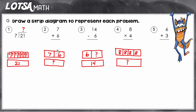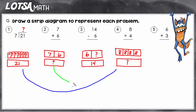Pay attention to how these division and multiplication strips look — they have several parts because division is just repeated subtraction and multiplication is just repeated addition. Notice how addition and multiplication are similar: because they're getting bigger, the unknown is always the whole. The same goes for subtraction and division — we know the whole, and the unknown is one of the parts. So you try to make some strip diagrams yourself, and if you need help, you can come back and rewatch the video.